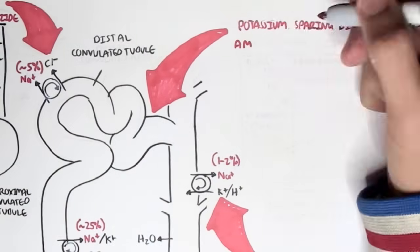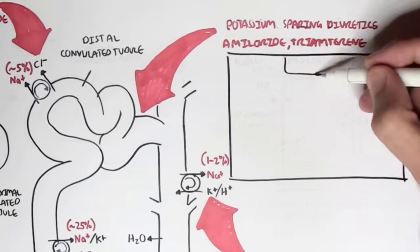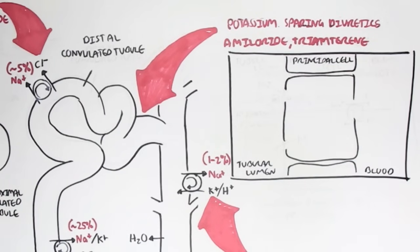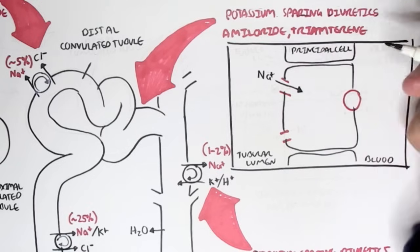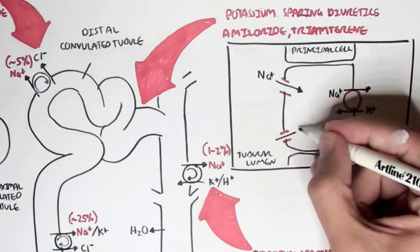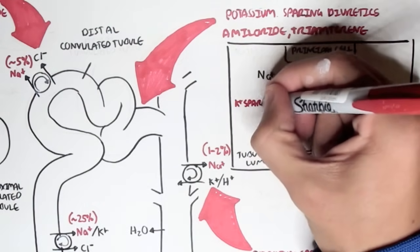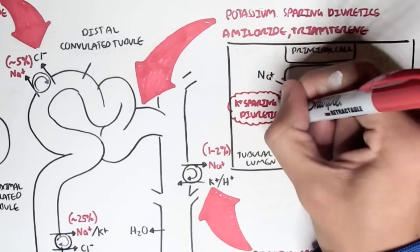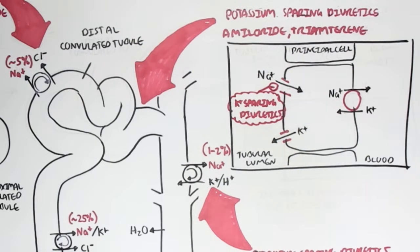The first class includes amiloride and triamterene, which work on the principal cells of the collecting ducts and the late distal convoluted tubules. Normally, sodium is reabsorbed from the lumen of the nephron and into the blood through a transporter; when it reabsorbs sodium, it excretes potassium into the tubular lumen. Amiloride and triamterene essentially inhibit this sodium reabsorption and thus also inhibit potassium excretion.